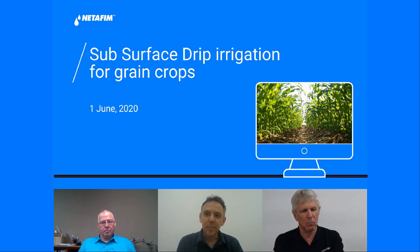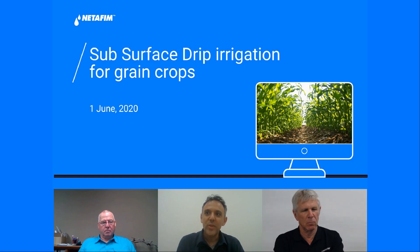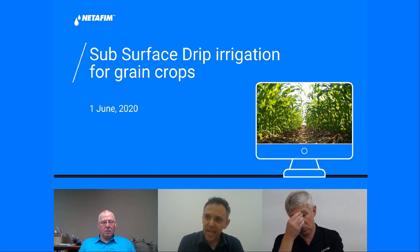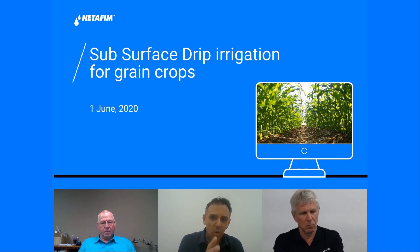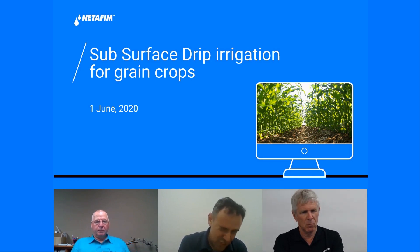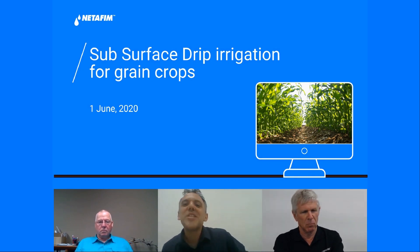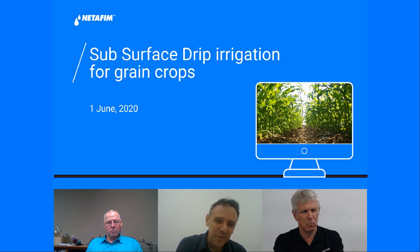Subsurface drip irrigation, which we refer to as SDI, allows grain farmers to reach high and consistent yields, even with limited water resources. SDI can fit any plot shape or size and any topography or soil type. Whether you grow rain-fed, or even with an inefficient irrigation system you're considering replacing, this webinar is for you.